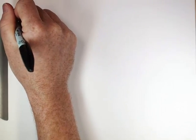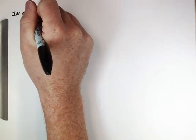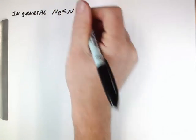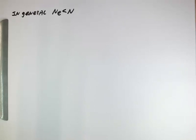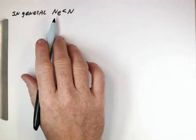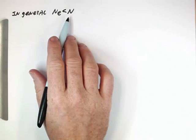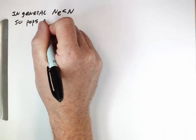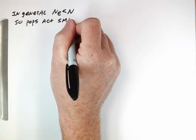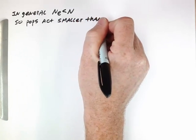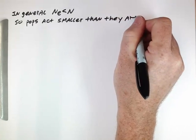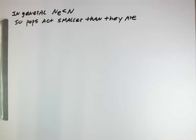In general, we've seen that the effective population size for a population undergoing sexual reproduction with different sexes, or where selection is going on, or the population size is fluctuating, the effective population size is less than the actual population size. So populations act smaller than they really are in terms of the number of individuals if you were just to calculate something called the census size.